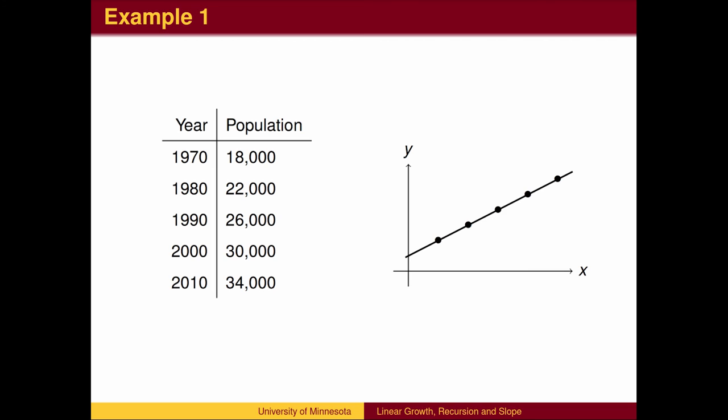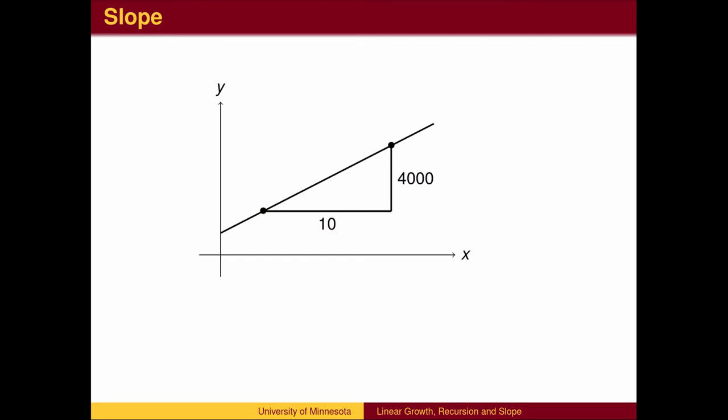When we plot this data, the graph is a straight line. As we move to the right by 10 years, we move up 4000 in population.